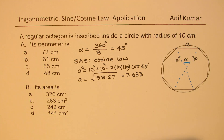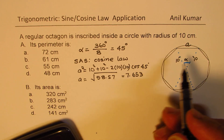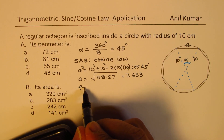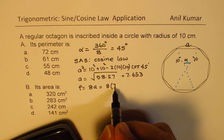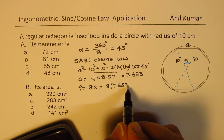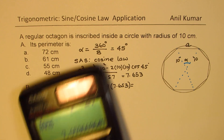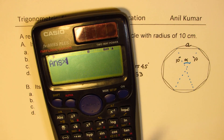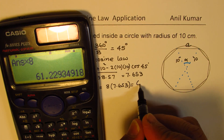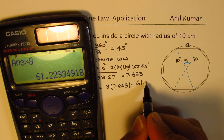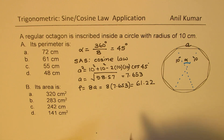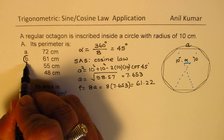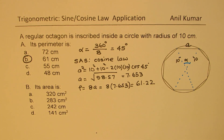So A ≈ 7.653 centimeters — that is one side of the octagon. Therefore, the perimeter = 8 × 7.653 = 61.22 centimeters. Matching the answer choices, it is closest to option B, which is 61 centimeters.